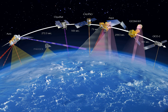As of 2008, more than 150 Earth observation satellites were in orbit, recording data with both passive and active sensors and acquiring more than 10 terabits of data daily.